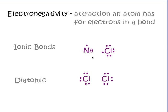When sodium, which holds very loosely onto its electron, meets up with chlorine, which pulls on electrons with an enormous amount of force, it's like having a pit bull meet up with a chihuahua fighting over a bone — the pit bull is going to win. Chlorine completely takes away that electron from sodium. When sodium loses the electron it becomes positively charged, and chlorine gains an extra electron and becomes negatively charged. That's what holds ionic substances together — the positive and negative charges attract each other electrostatically, with each atom having its own octet of electrons.